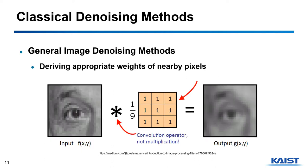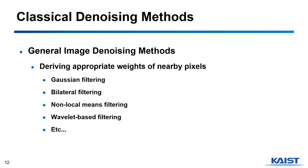Let's get back to general denoising. The most classical denoising methods use the weight of nearby pixels to denoise the center pixel. Weights are also set as kernels. The figure shows the example of an averaging kernel which smooths the image. There are many strategies to assign appropriate weights for the kernel, and these methods have their own logic to define those weights.